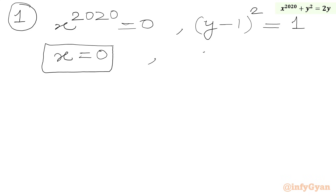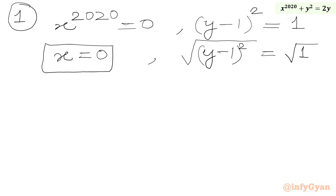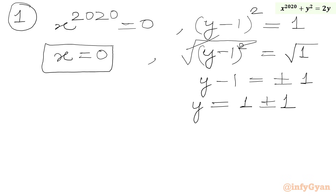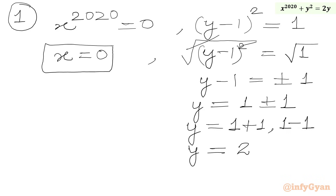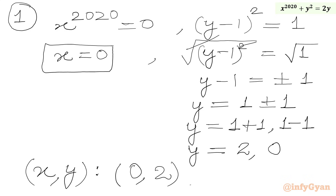From the second equation, taking square roots of both sides, (y minus 1) squared gives y minus 1 equals plus or minus 1, so y equals 1 plus or minus 1. This gives two values: y equals 1 plus 1 equals 2, and y equals 1 minus 1 equals 0. So the ordered pairs from the first system are (0, 2) and (0, 0).